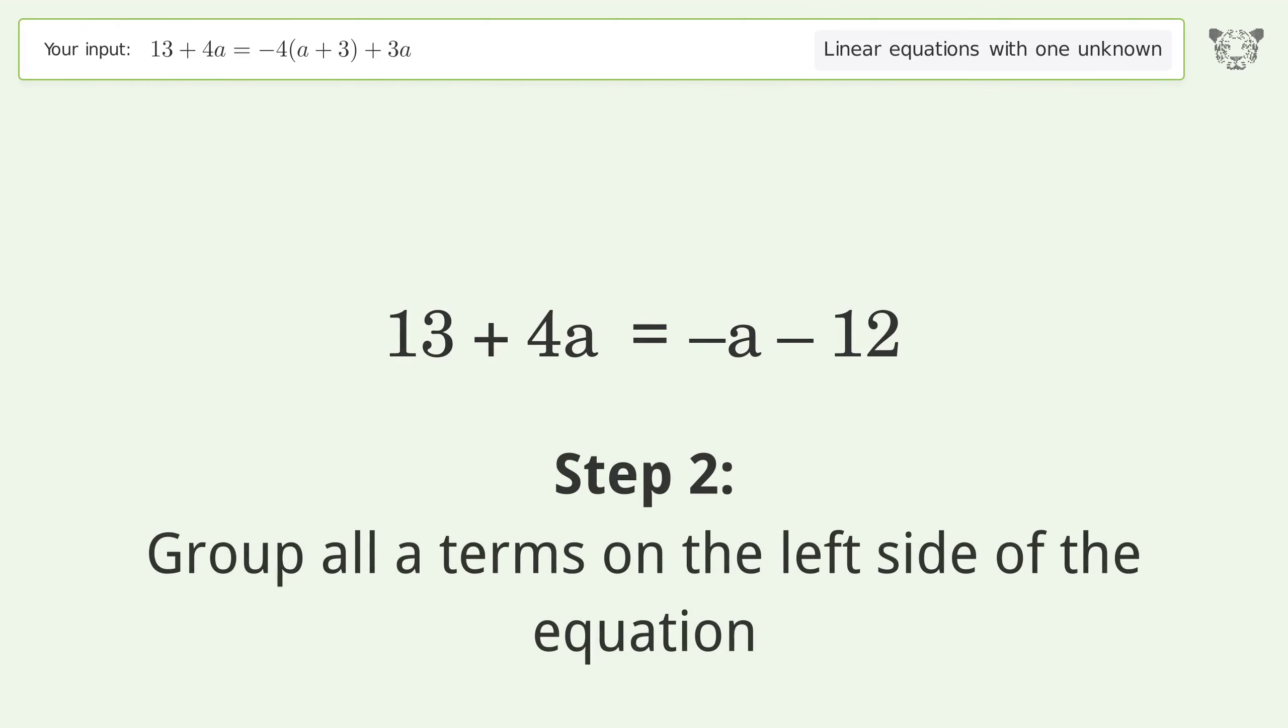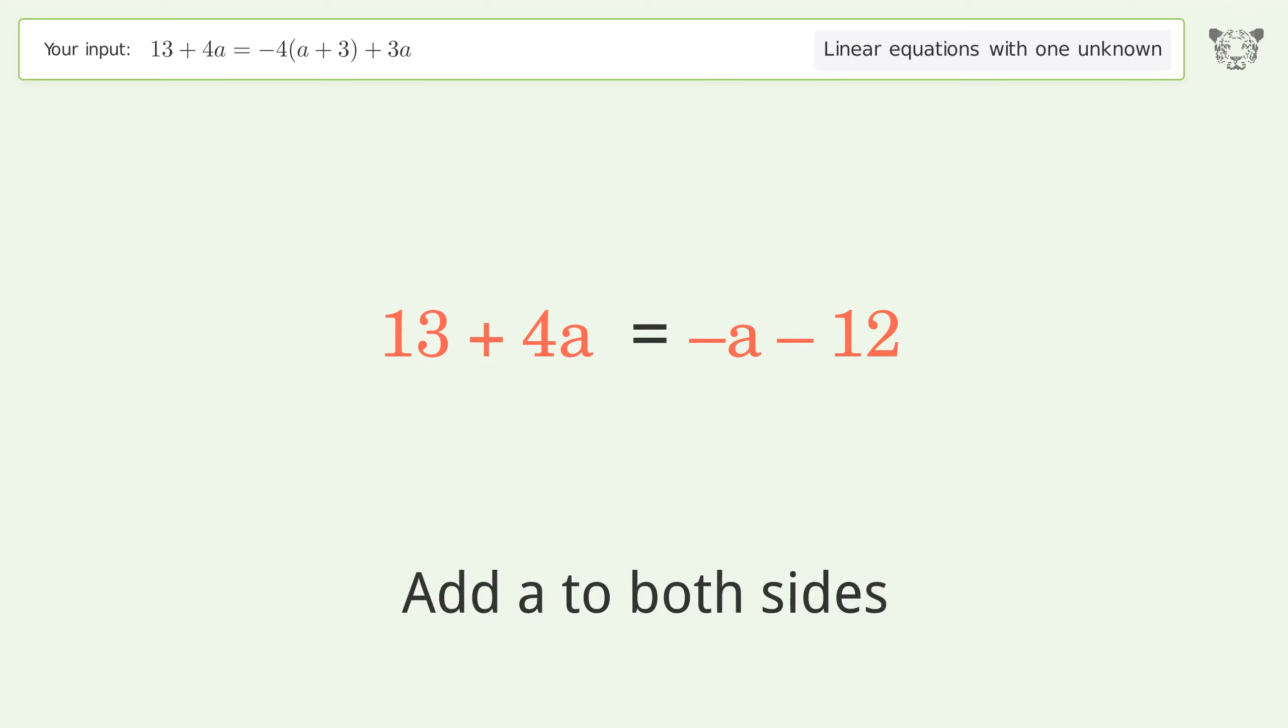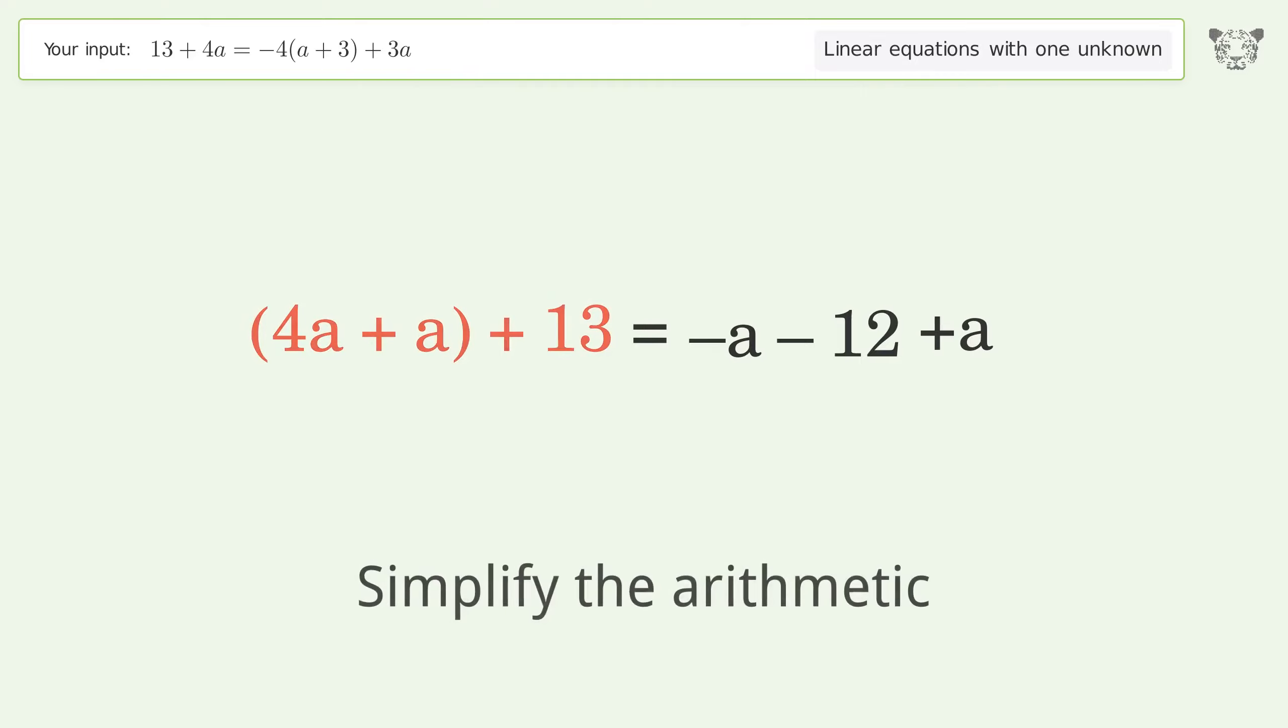Group all a terms on the left side of the equation by adding a to both sides. Then group like terms and simplify the arithmetic.